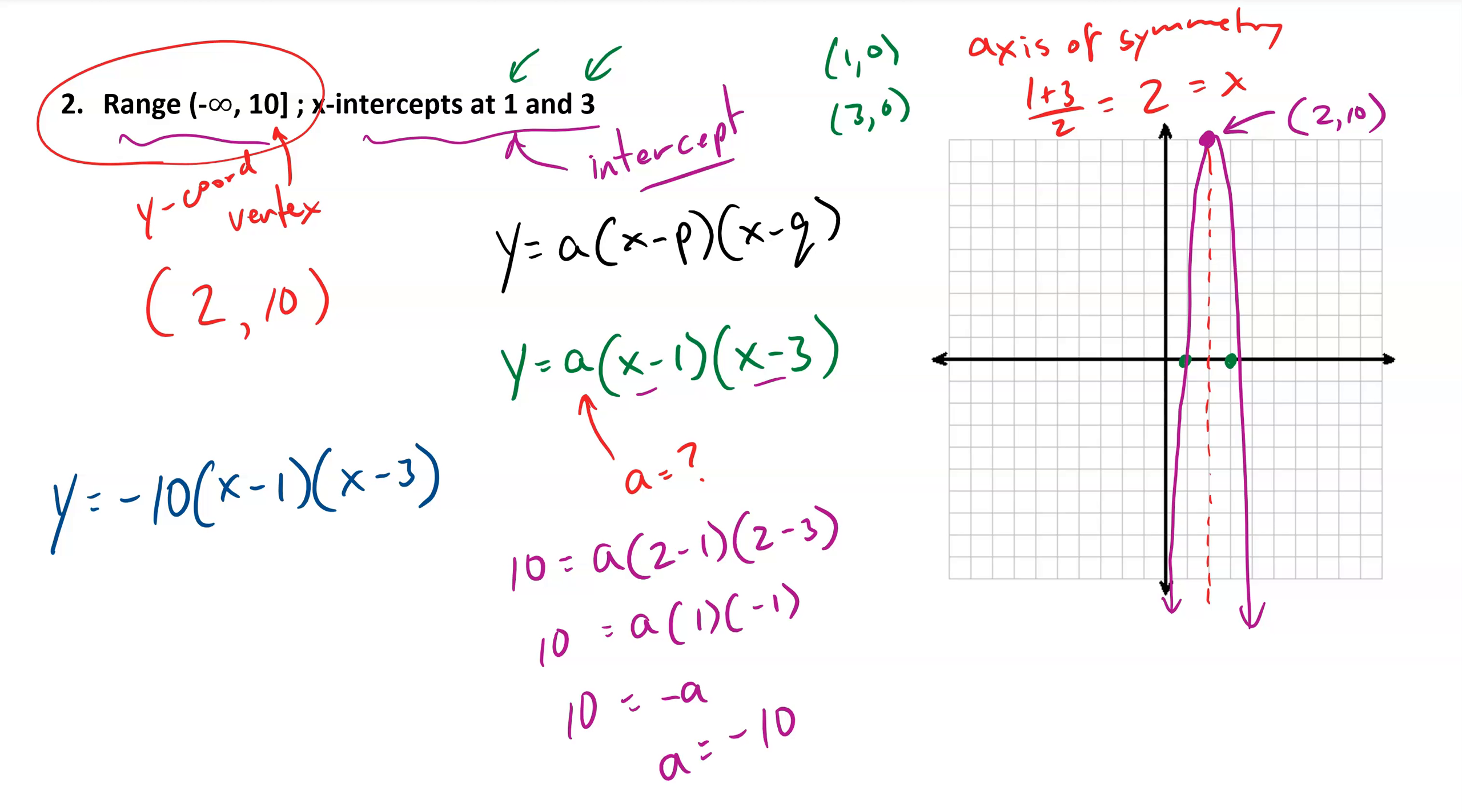So it's important to be sensitive to what we know. In this case, we know the x-intercepts, which tells me that intercept form is going to be the easier, more accessible form to use. As the process gets going, though, we do find the coordinates of the vertex, and so we could alternatively use vertex form. So another form for this parabola would be y equals a(x minus 2) squared plus 10.